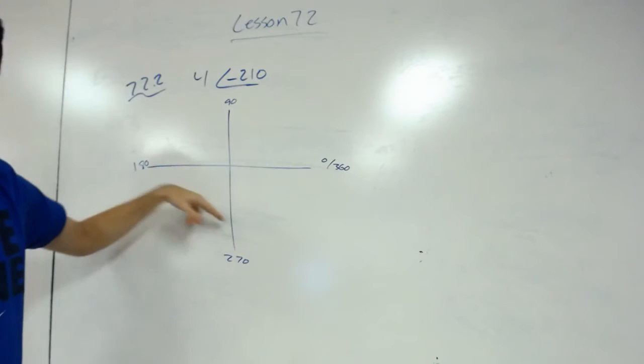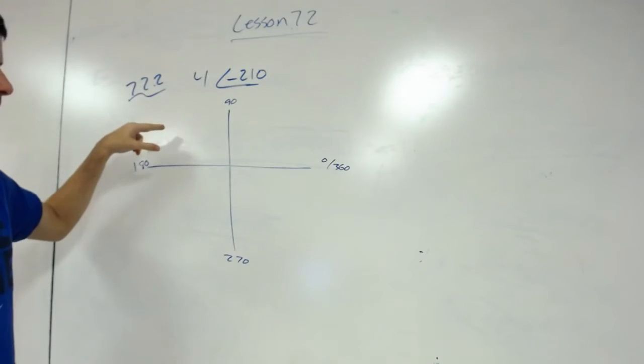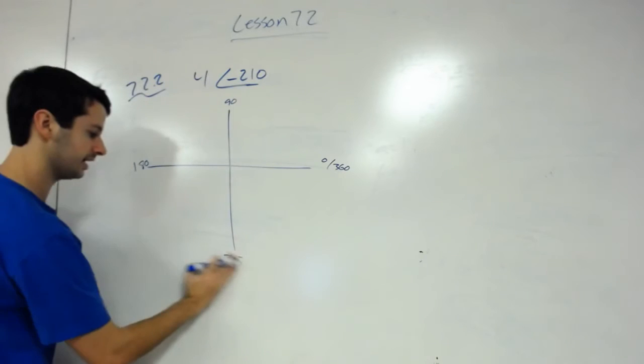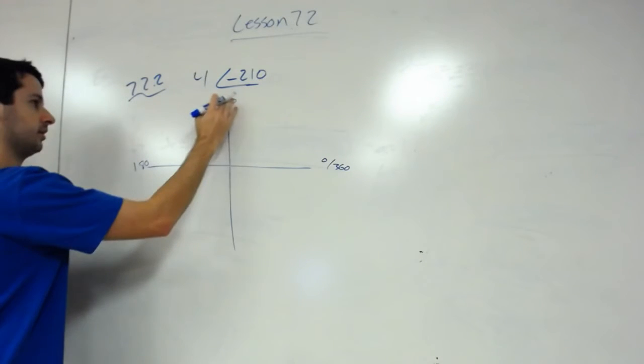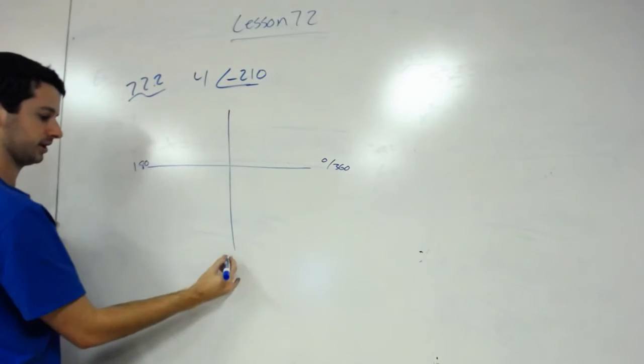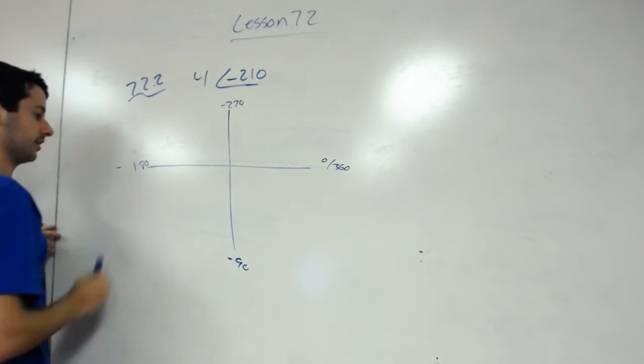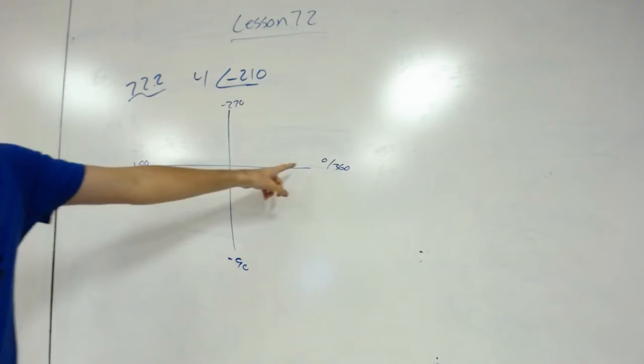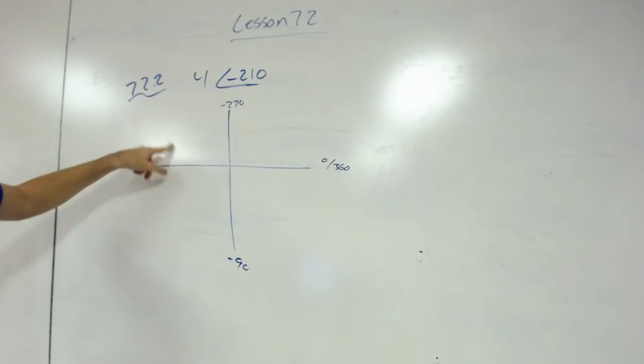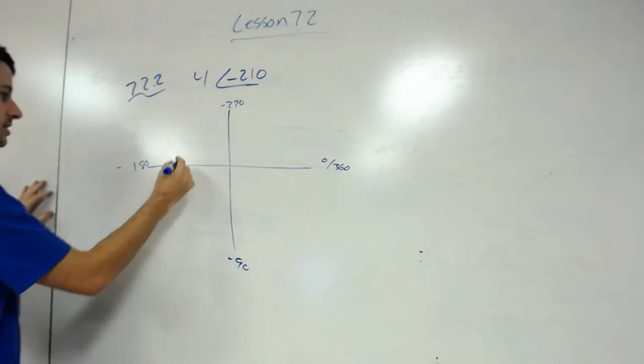If I was thinking of it as a negative, it would be something like this: negative 90 would be there, negative 270 there, and then obviously negative 180. So I go to where negative 210 would be since we're going backwards, and that would be somewhere in this area.